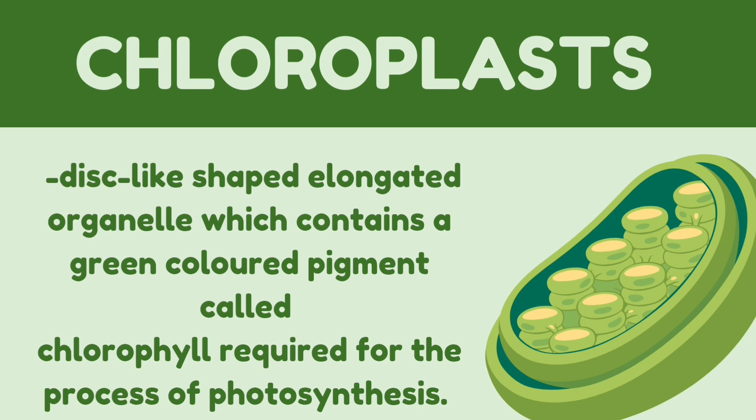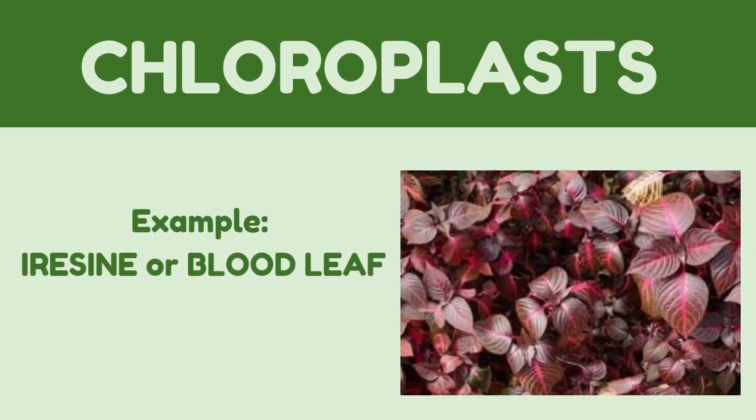You may be wondering why plants are mostly green in color. That is because of the chlorophyll that the chloroplasts contain. Chlorophyll does not absorb much green light — instead, it reflects it. That is why we see plants mostly in green colors. Although some plants are not green and may appear red, like the irisín plant known as dahong pula, because they do not contain chlorophyll.